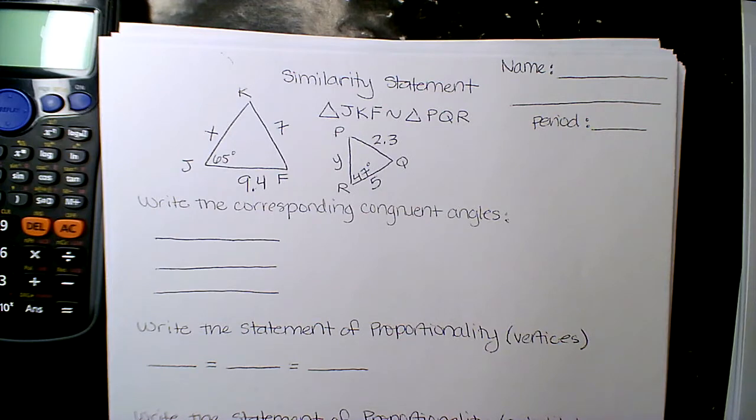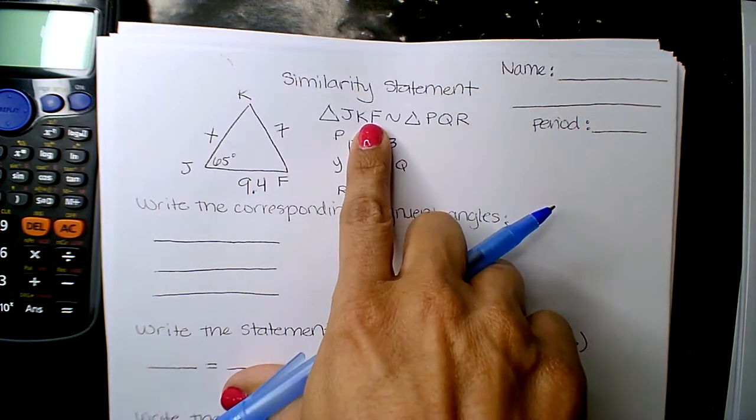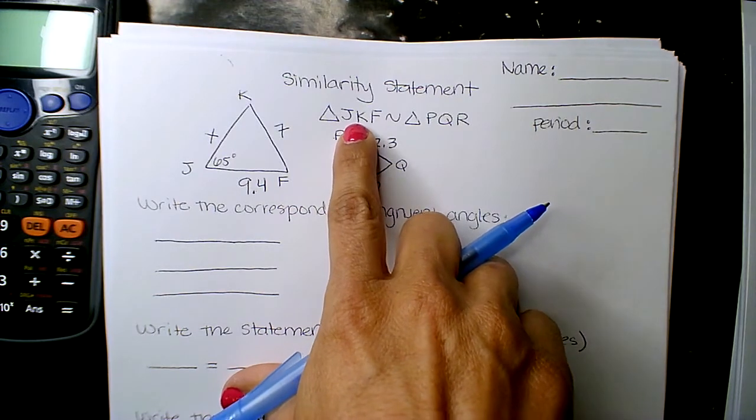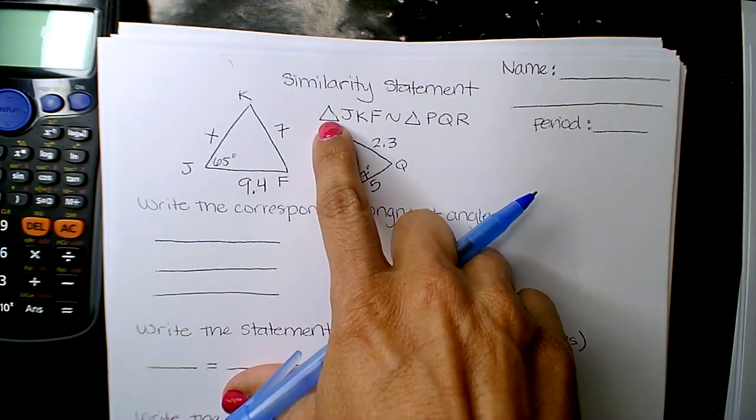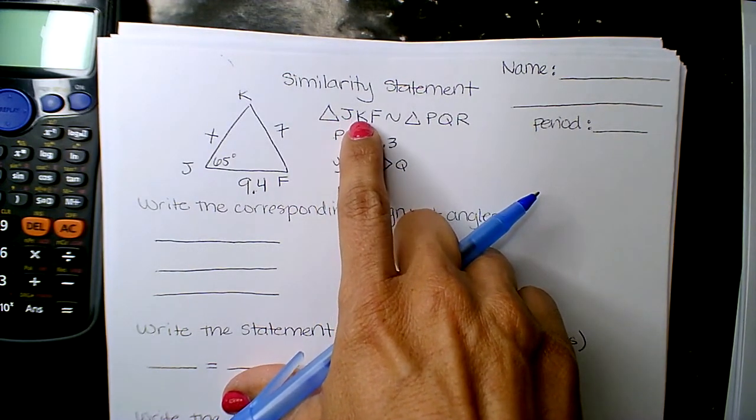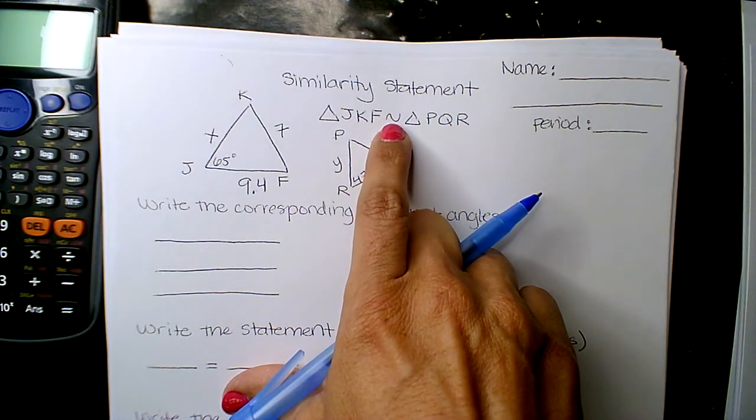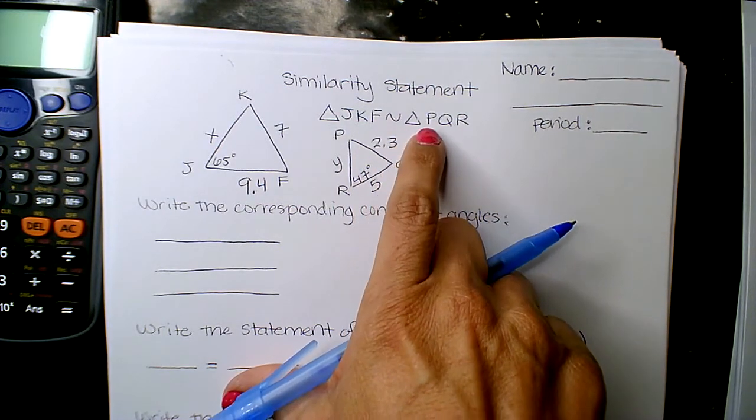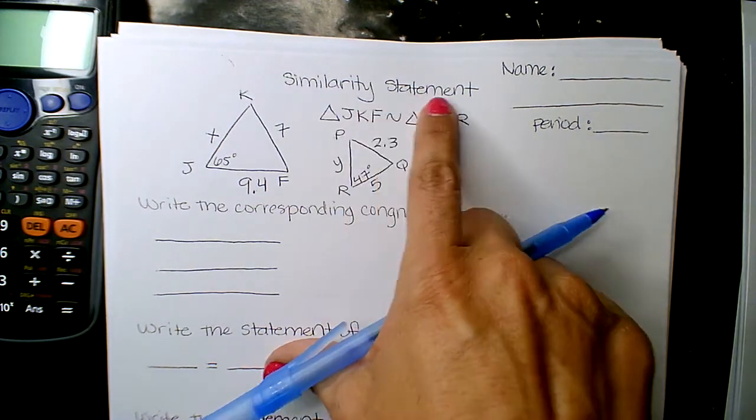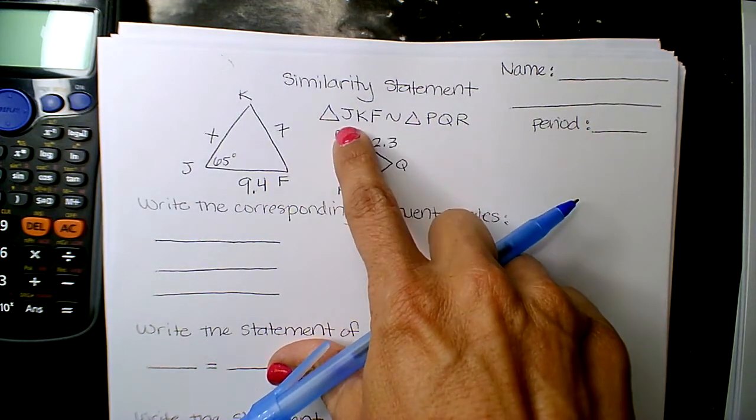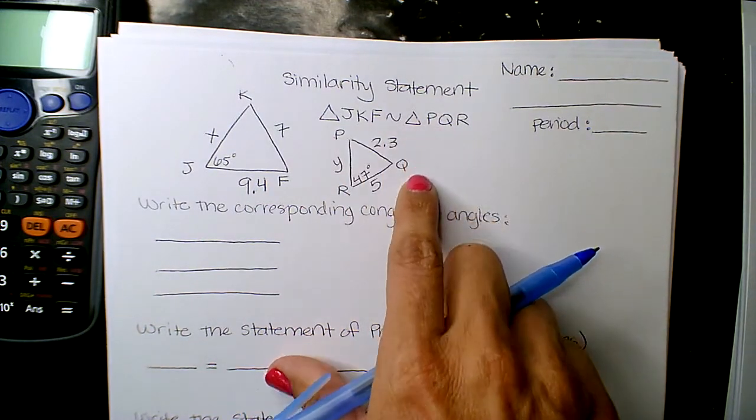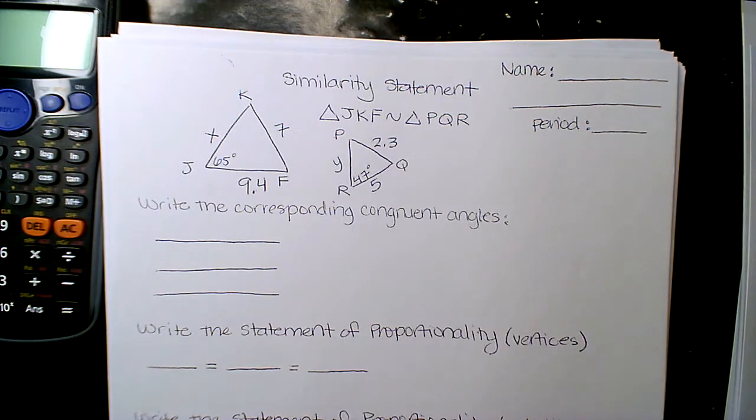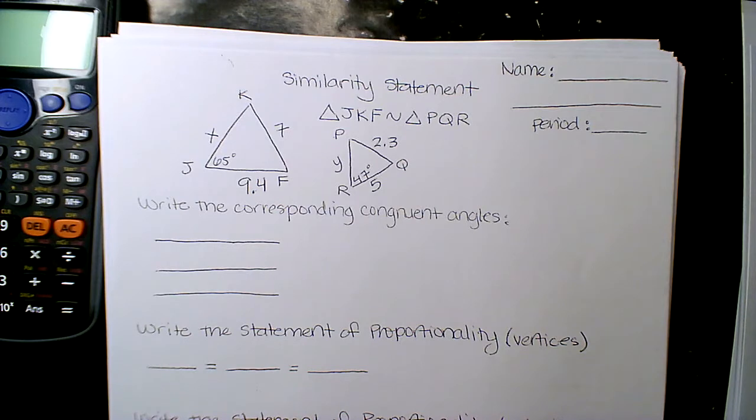Okay, so look, as far as similarity, this is really what you have to understand. This triangle J, K, F, similar triangle P, Q, R is called a similarity statement. This gives you everything you need to know. You don't need a diagram. They could just give you the givens and you should be able to tell me everything there is to know about the size and the angles and the scale factor, everything.